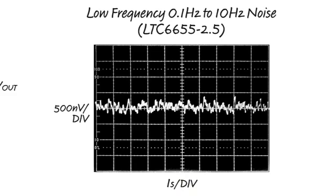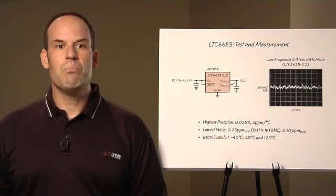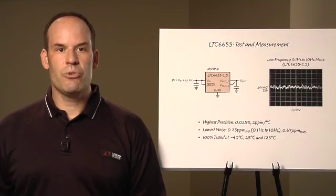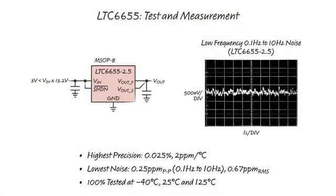The low frequency noise is especially important, as high frequency noise can be effectively filtered or reduced by averaging. Low frequency noise is the most difficult to remove in a data acquisition system. The LTC6655 has only 500 millivolts dropout, so it is compatible with low voltage supplies.